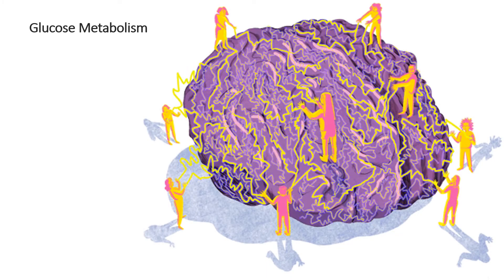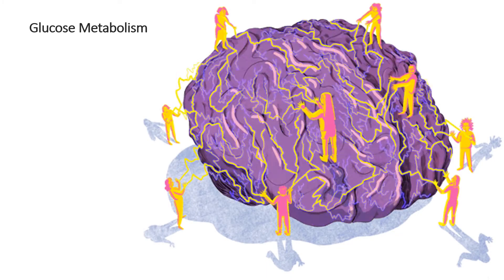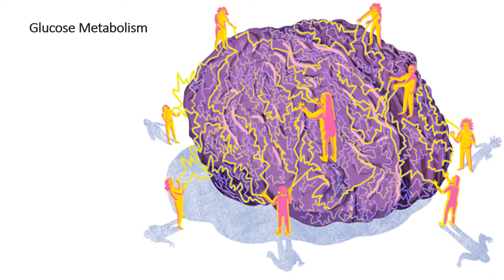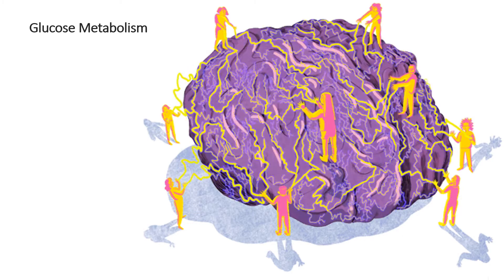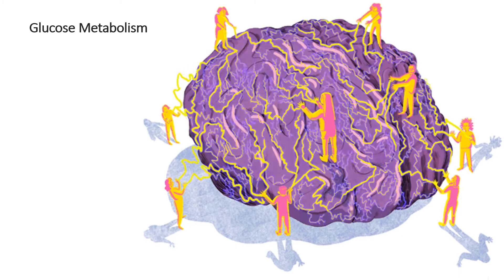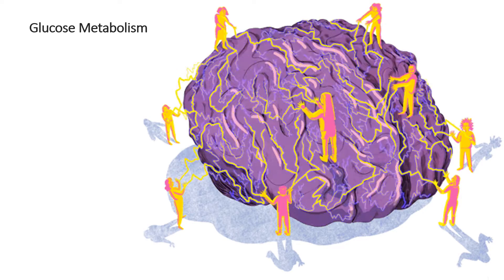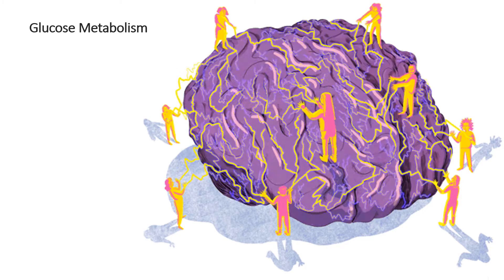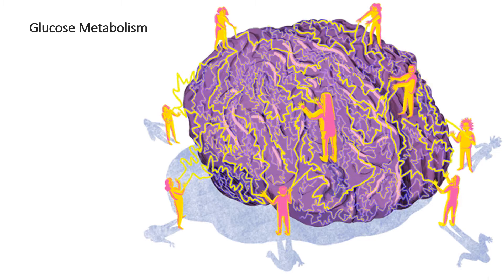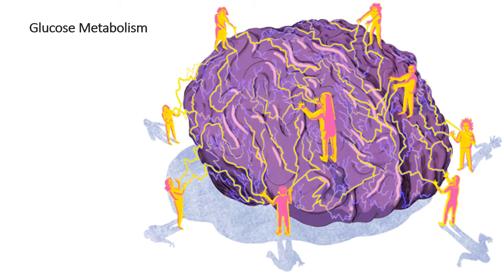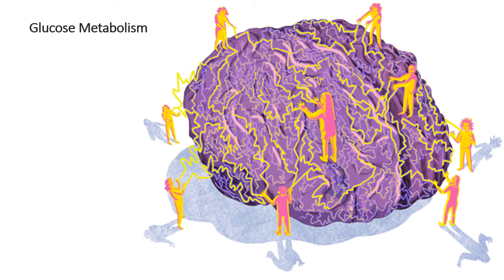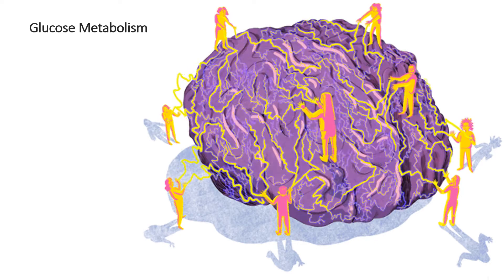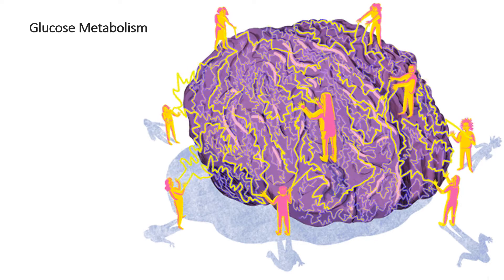After an initial period of hyperglycolysis and metabolic mismatch, glucose metabolic rates go into a state of impaired metabolism that can last 7-10 days in adult animals. Local cerebral metabolic rates for glucose are increased within the first 30 minutes, up to 30-46% above control levels. After 6 hours, there is a relative glucose hypometabolism that can last up to 5 days.